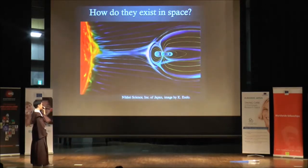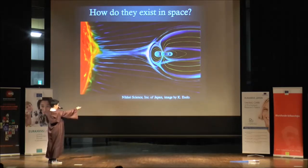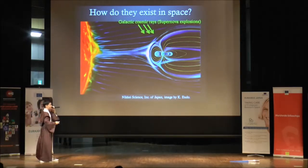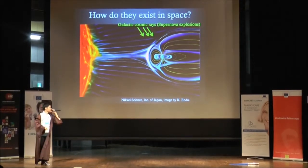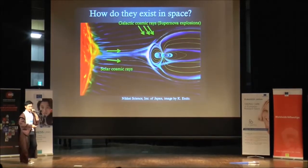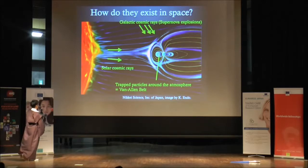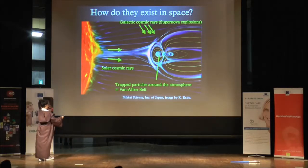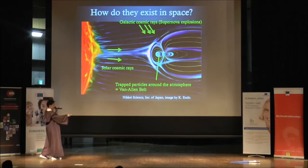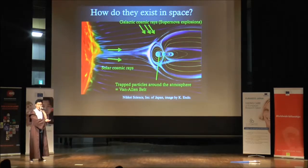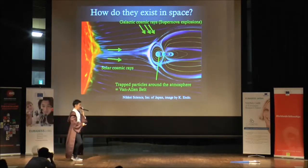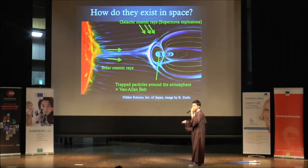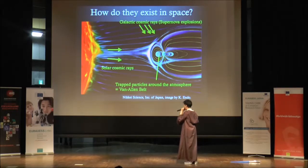I will show you the space around the Earth. You can see the Earth over here. Space radiation exists from galactic cosmic rays, which are induced by supernova explosions; solar cosmic rays induced by solar flares; and trapped particles around the atmosphere, which are called the Van Allen Belt. The reason we have trapped particles around the atmosphere is because of the magnetic field of the Earth. The Earth is kind of like a magnet, which has both N and S poles — north and south. This is why we have trapped particles here.